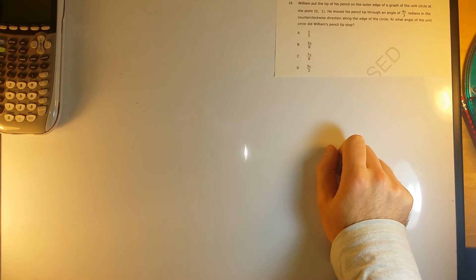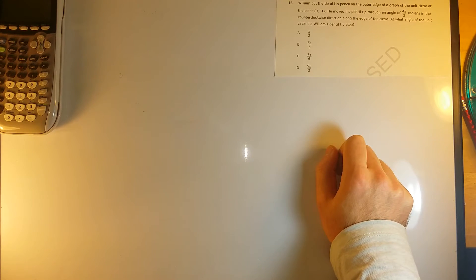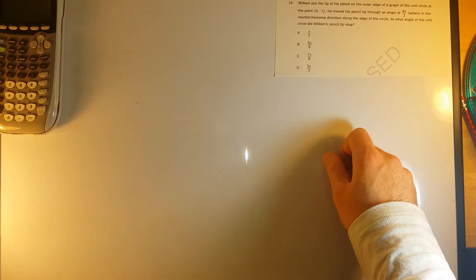Problem number 16. William put the tip of his pencil on the outer edge of a graph of the unit circle at the point (0, -1). He moved his pencil tip through an angle of 4π over 3 radians in the counterclockwise direction along the edge of the circle. At what angle of the unit circle did William's pencil tip stop?